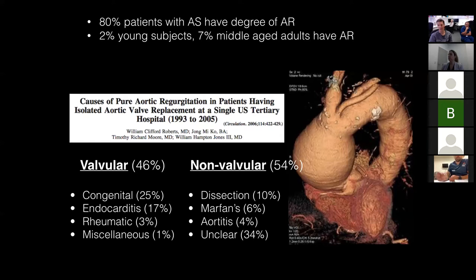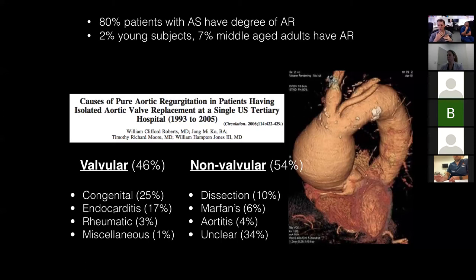Aortic regurgitation is always a popular exam topic because it's great for discussing acute versus chronic effects and can be associated with other pathologies. The bicuspid aortic valve — the most common congenital valve disease — is often associated with AR. With endocarditis, you look for those eccentric jets, and that gives a chance to discuss the advantages and disadvantages of each method of assessing severity.